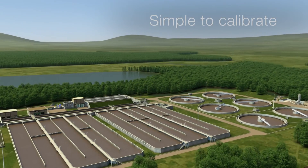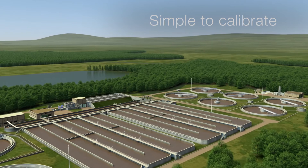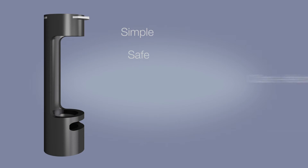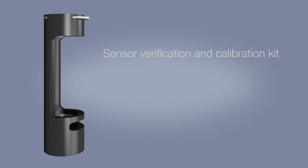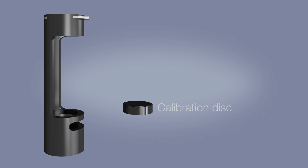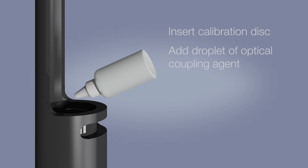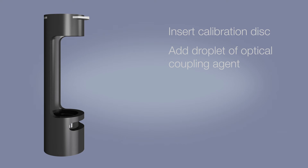The ATS-430's performance can be easily verified with ABB's Sensor Verification and Calibration Kit. Simple, safe and cost-effective, the kit provides the accuracy of a Formazine calibration without the need for chemical standards that can be costly, dangerous and difficult to prepare. Each kit is provided with a range of calibration disks that have been factory calibrated against primary turbidity standards. Simply place the appropriate calibration disk into the holder, add a small droplet of the optical coupling agent, and insert into the holder.